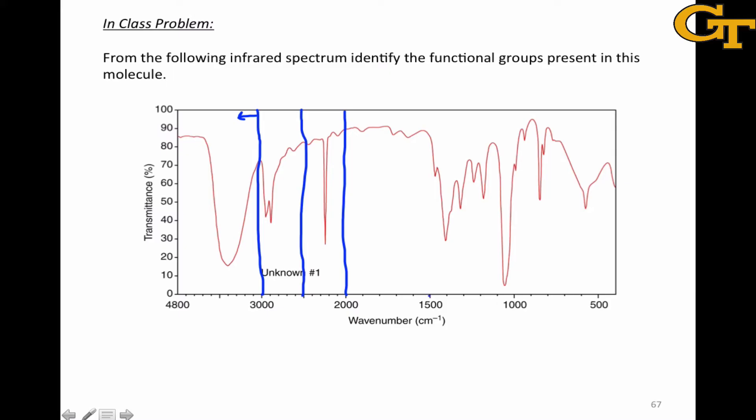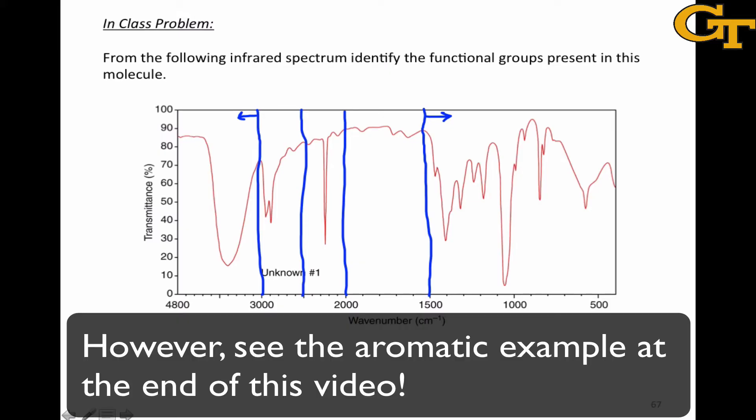Between 2000 and 1500 is where we typically see our double bond stretches, for example for alkenes and carbonyls. And everything to the right of 1500 is generally either fingerprint region junk or specific stretches of CC, CN, and CO that aren't always very diagnostically useful.